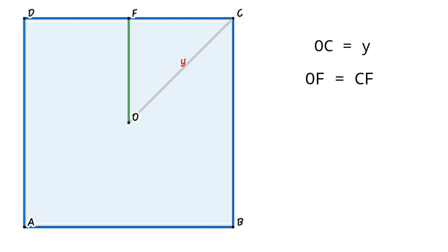We know that OC equals Y and OF equals CF. Apply Pythagorean theorem in triangle OFC. Then OF squared plus CF squared equals OC squared. So 2 OF squared equals Y squared. That is OF equals Y by root 2.